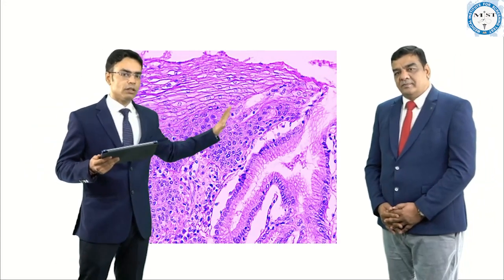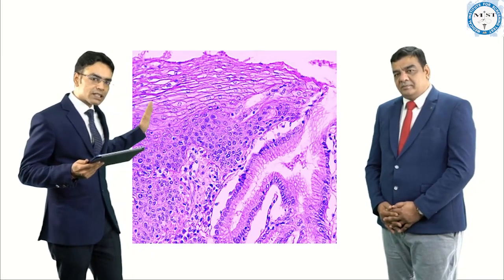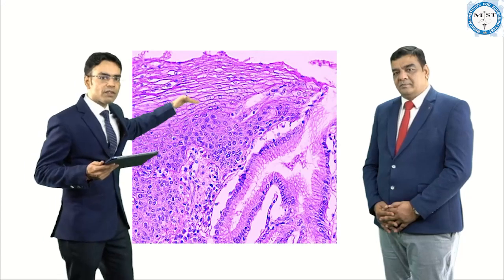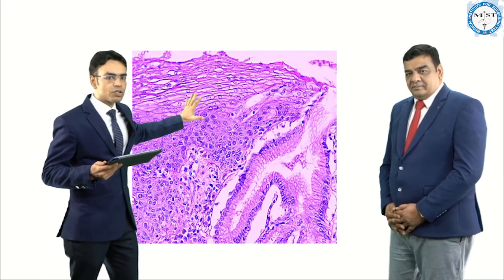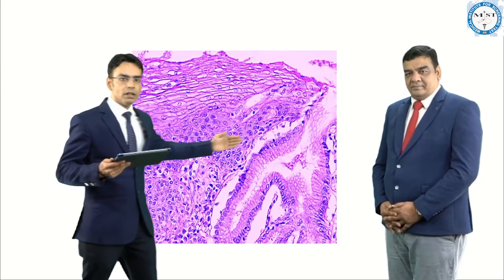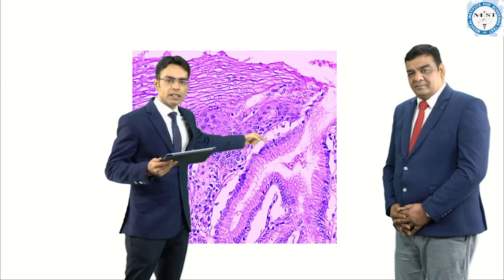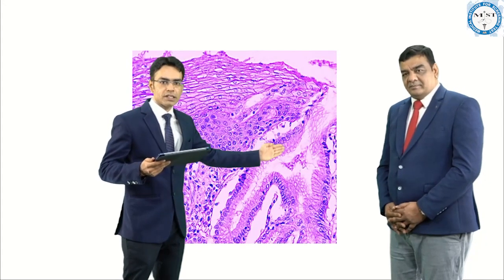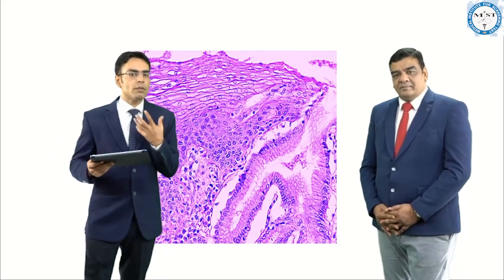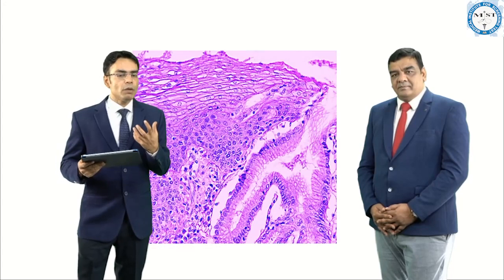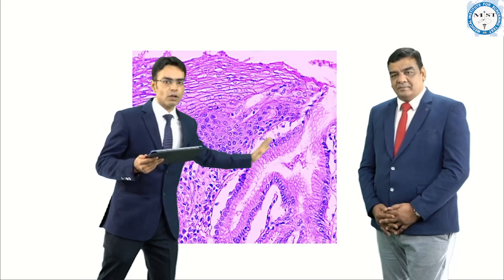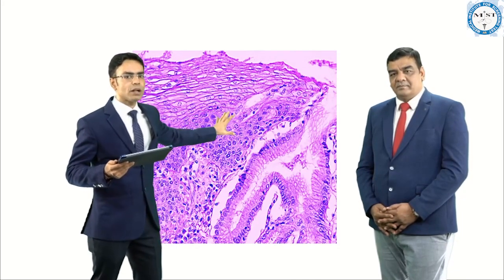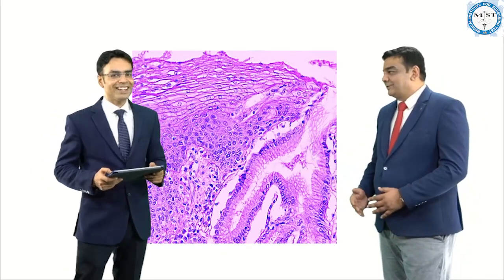This is the normal squamous-columnar junction. On one side you can see the stratification — simple squamous cells of the esophagus. On the other side are elongated cells with nuclei at the base — these are columnar cells, because the stomach secretes HCl and needs columnar cells. So this part is from the stomach with columnar cells, and this part is from the esophagus with squamous cells. This is how the normal esophago-gastric junction looks histologically.